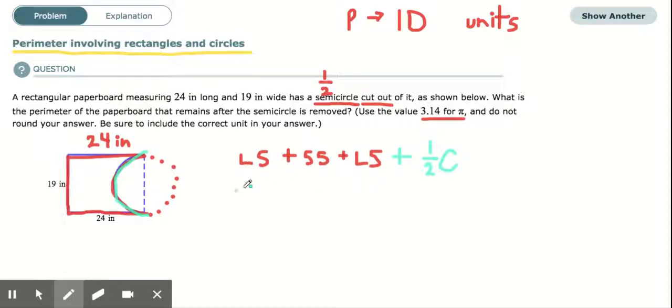So what I'm going to do is I'm going to translate this into values, actual numbers. So the long side is 24. To that, I'm adding a short side, 19. To that, I'm adding a long side, 24. And to that, I'm adding half of the circumference or half of the circle.